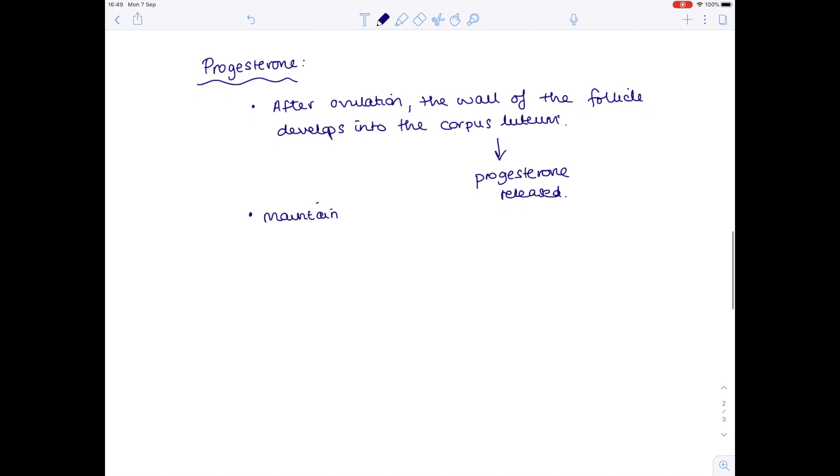So we know that the estrogen was responsible for repairing the uterus lining, but we need to maintain that endometrium and that's where the high levels of progesterone come in. Now later on in pregnancy, the placenta takes over the role of producing progesterone. So just be aware that progesterone is released initially by the corpus luteum and then later on by the placenta.